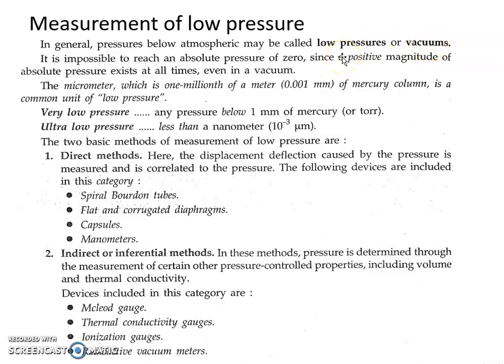The micrometer is the common unit of low pressure. One micrometer is one millionth of a meter of mercury column.